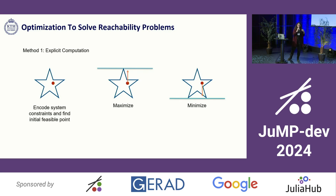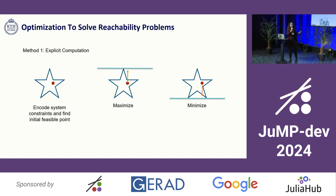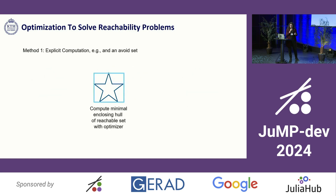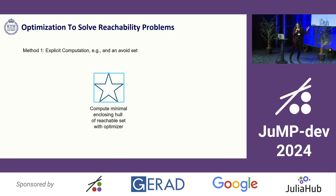One of the methods by which you can use optimization to solve reachability problems is through what I'll call explicit computation. Essentially, what's going on is we encode the system constraints for our control system into the optimizer, and we find an initial feasible point, and then we maximize and minimize along every dimension to find a minimal enclosing hull of the reachable set using the optimizer. The star represents this sort of implicit reachable set that we don't have access to, but it exists in the optimizer after we encode the constraints for our control system.